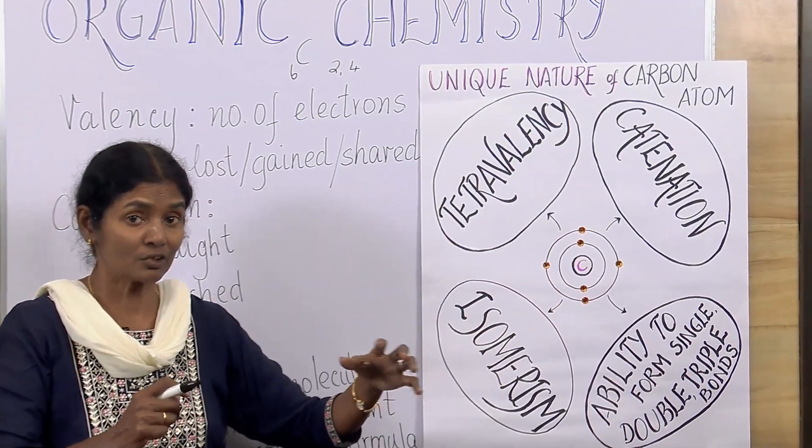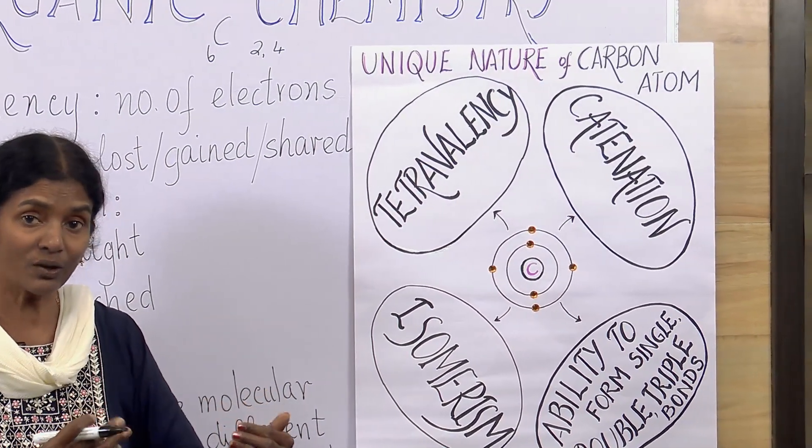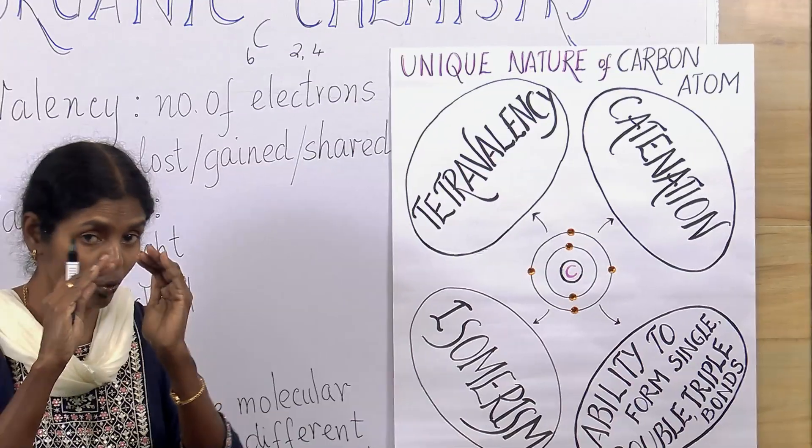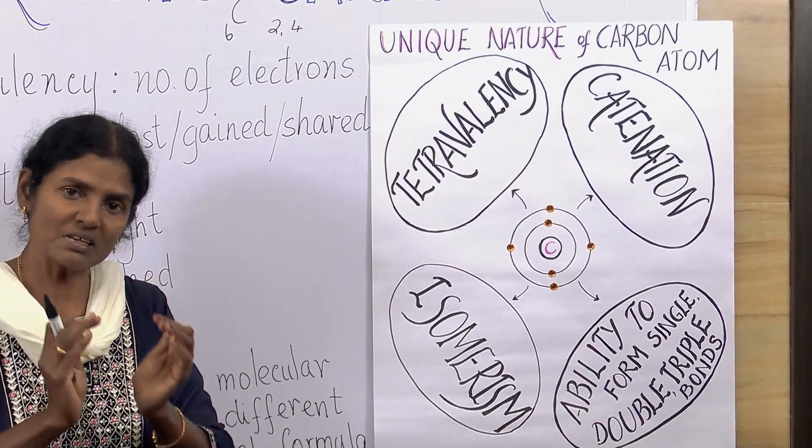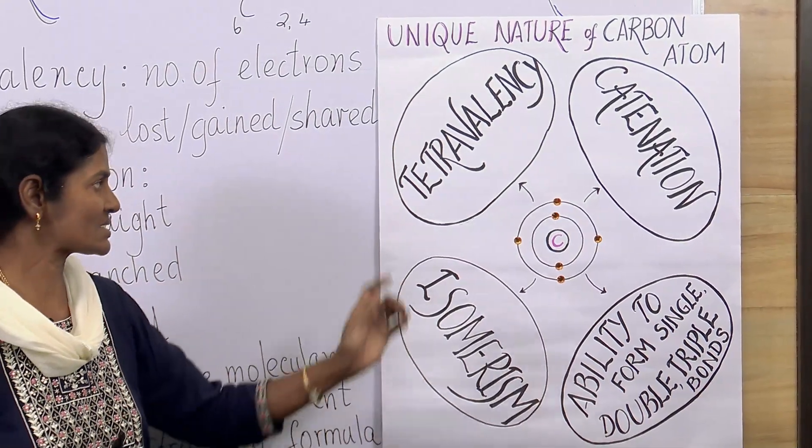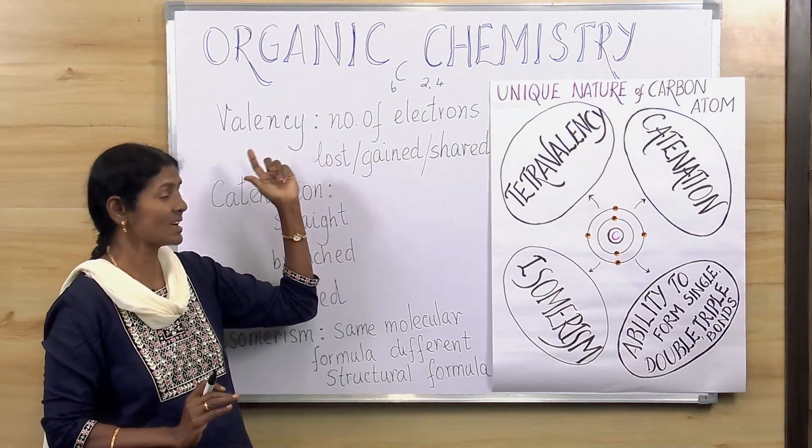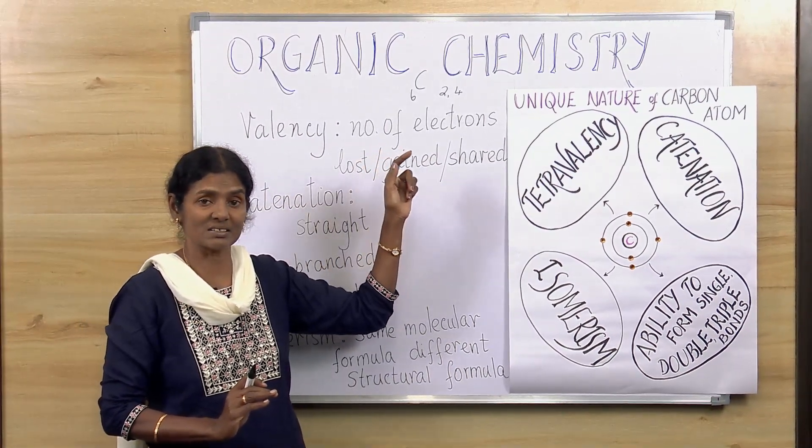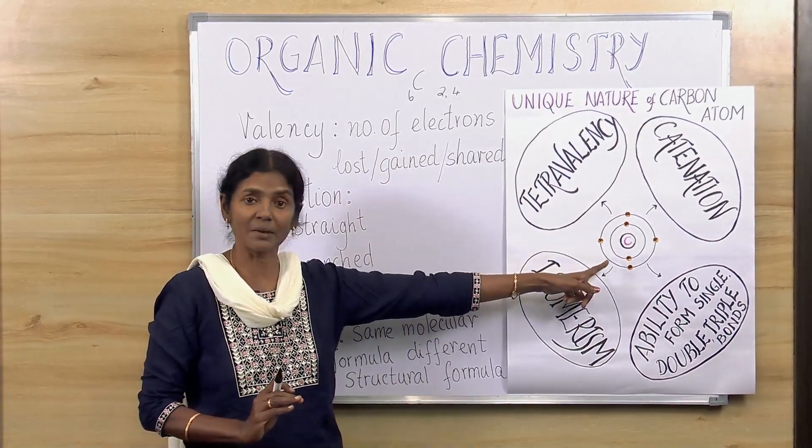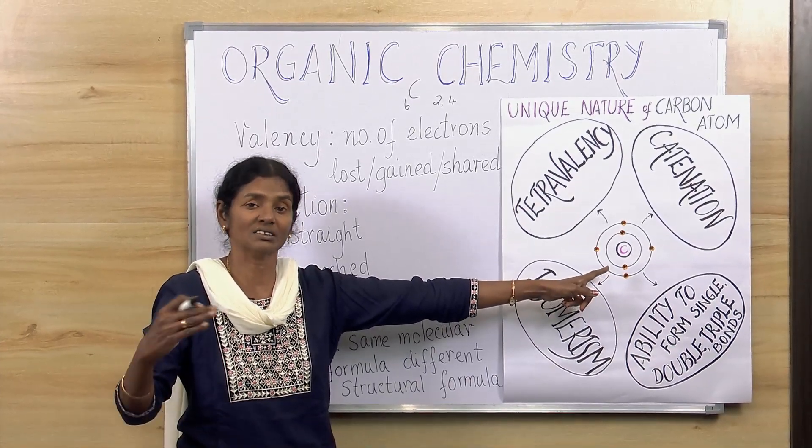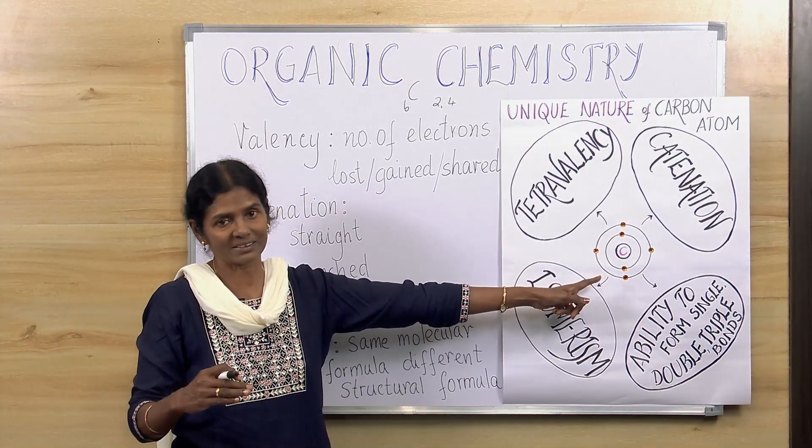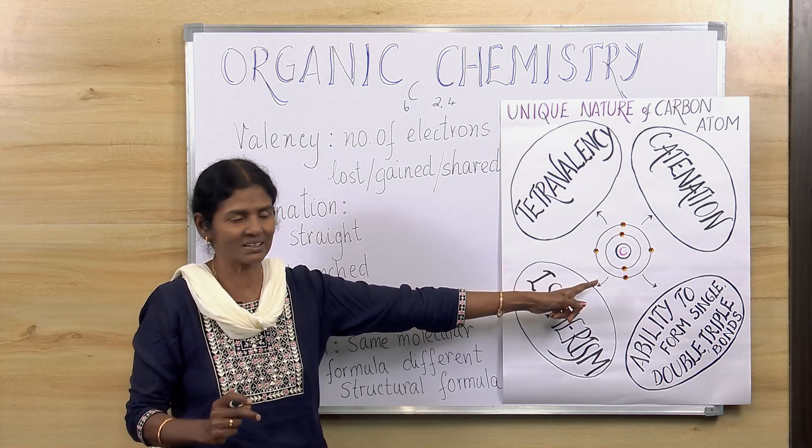It's very difficult for carbon to lose four or to gain four to obey the octet rule. So, the best thing that carbon usually does is to share. This valency is known as tetracovalency because it's able to share with four other elements to obey the octet rule. That's the unique nature.